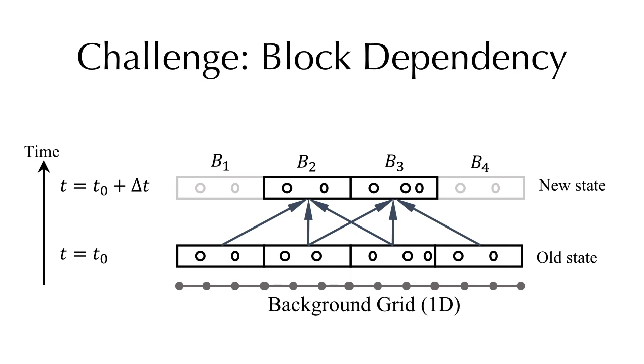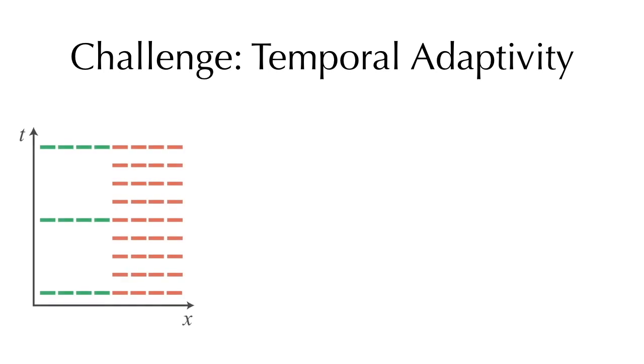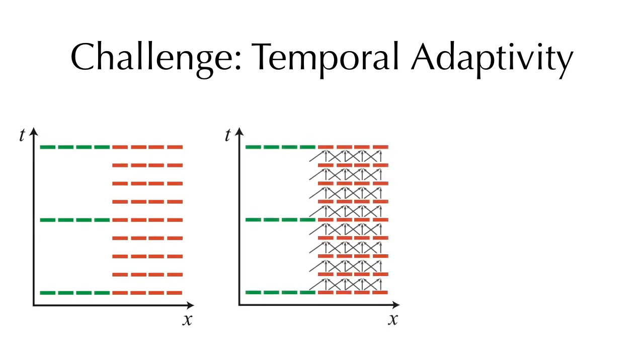A future block depends on not only itself, but also its neighborhood in the current time step. We illustrate block dependency in this 1D example. Suppose now we have 1D blocks. The green ones have a 4 times larger time step than the orange ones. When computing the states of orange blocks in increasing time order, there will be missing blocks when time step switches.